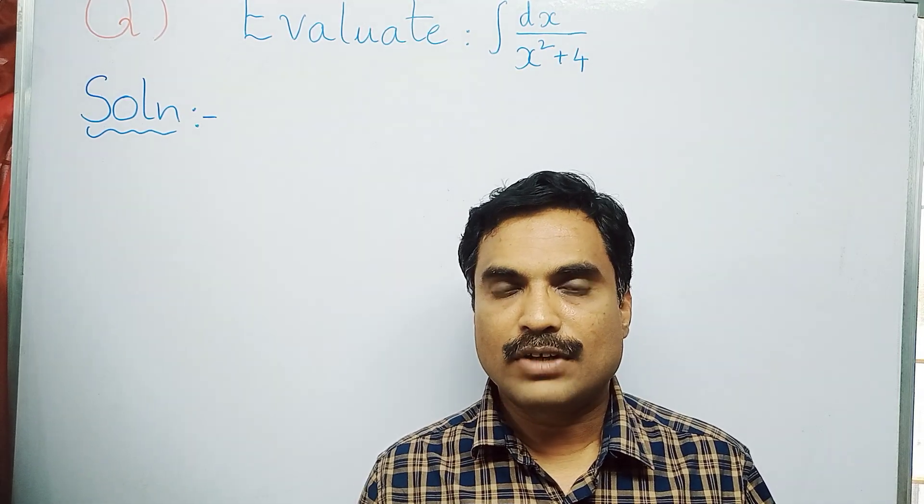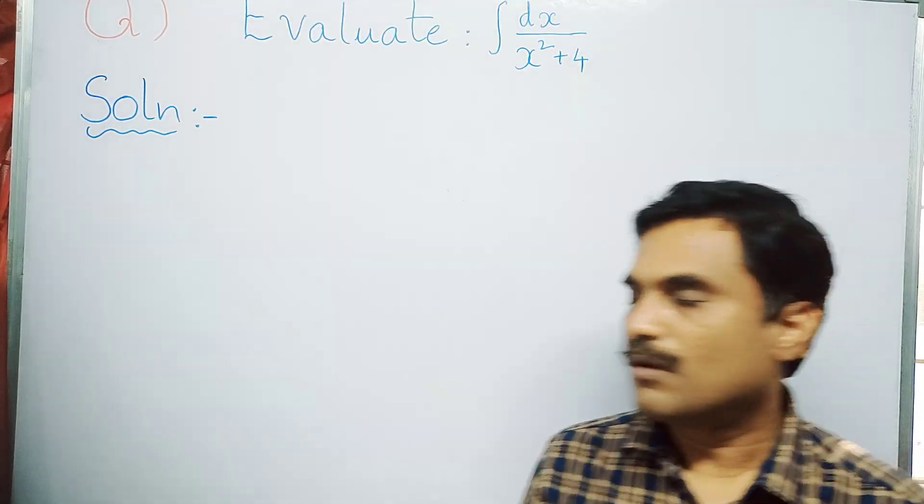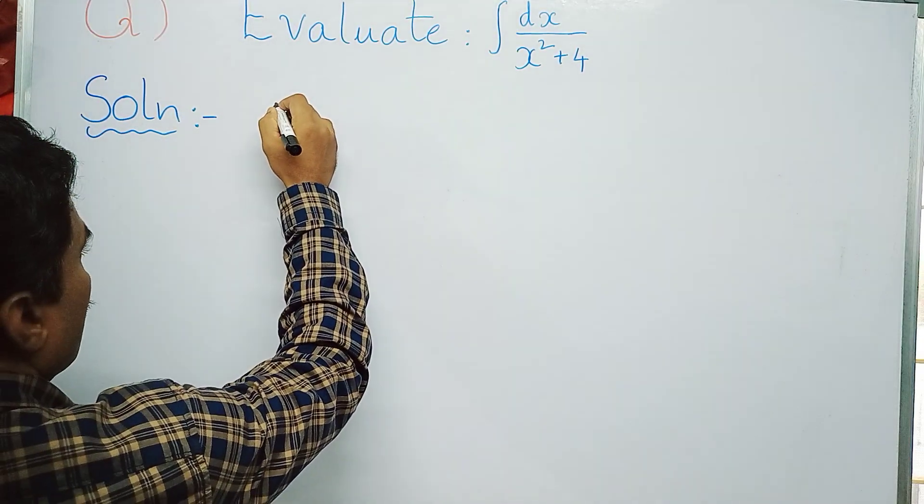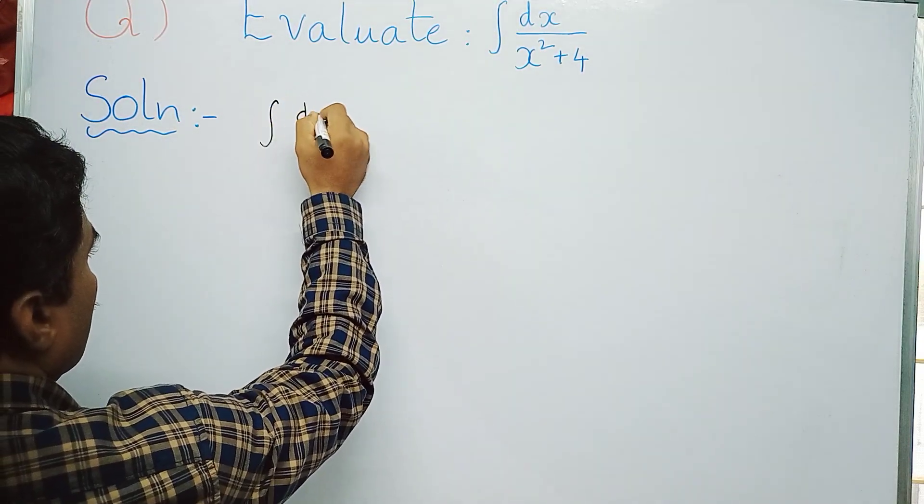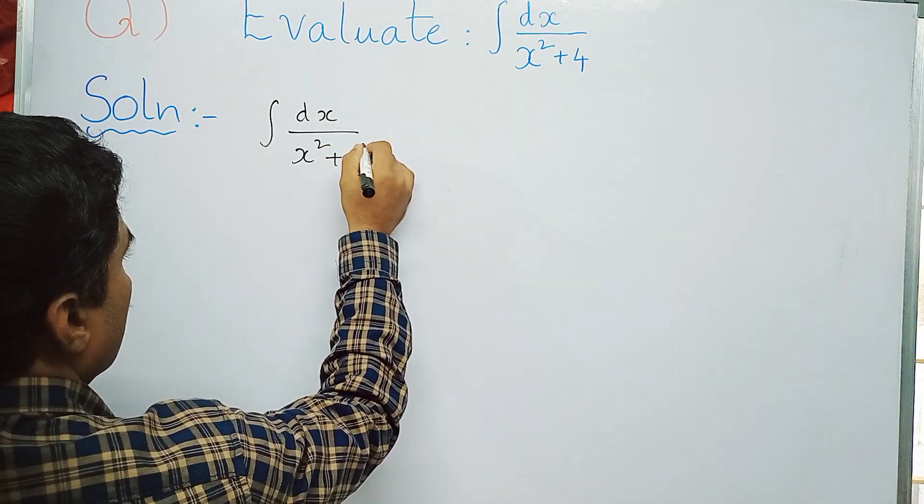Can be written as 1 by a into tan inverse of x by a. So by using that formula you can solve this problem. So first write that formula. We know that integral dx by x squared plus a squared...